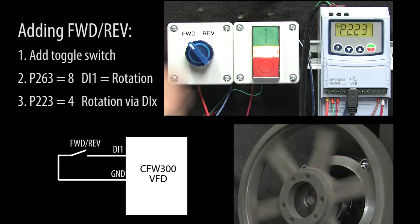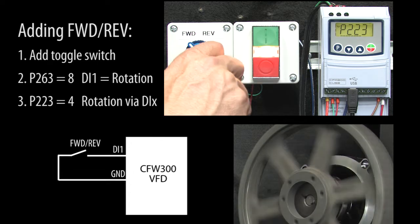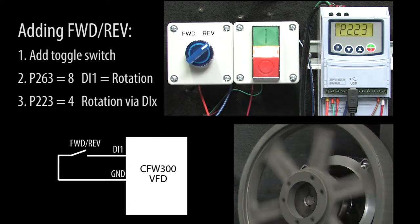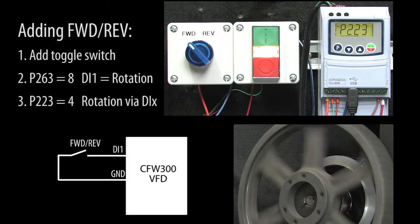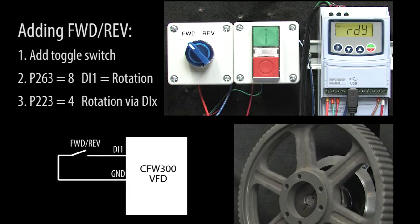That's it. If I hit run, the drive starts the motor. Flip the direction switch and the drive ramps the motor down and then back up again in the opposite direction using whatever values you set for the acceleration and deceleration ramps.